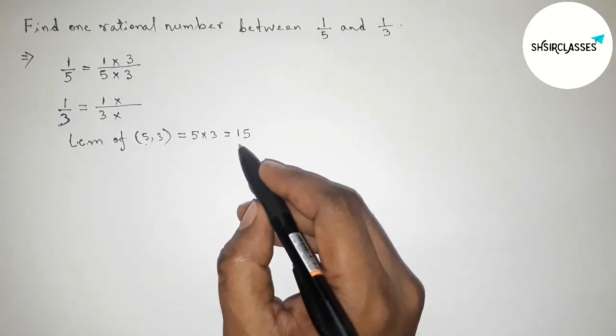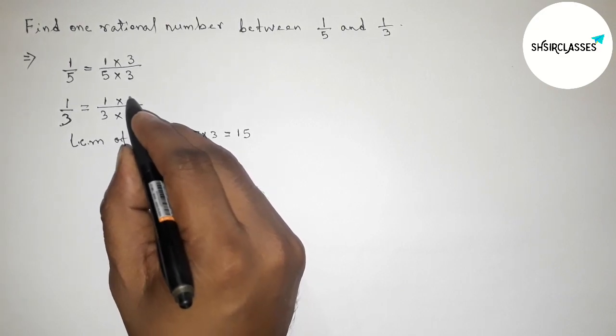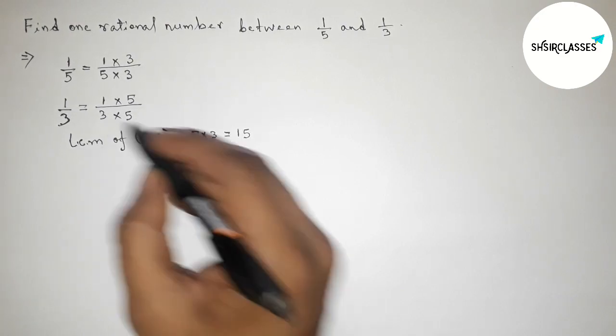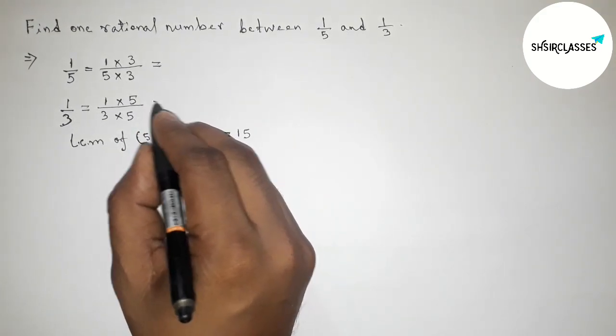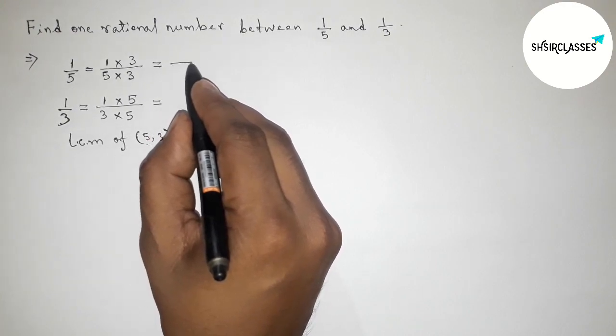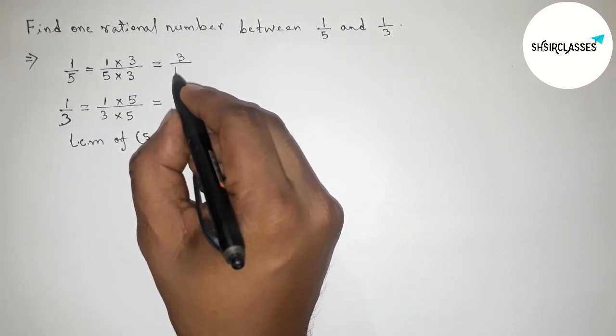So this is again we have to make here 15, so taking up and down 5. So 5×3 is 15. So equals to this is 3/15 and 5/15.